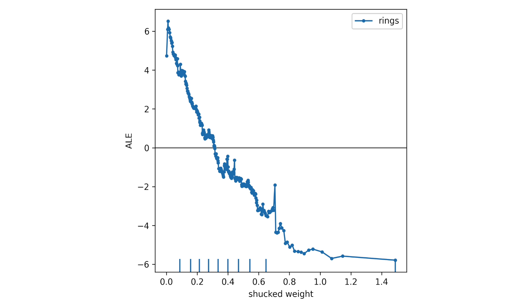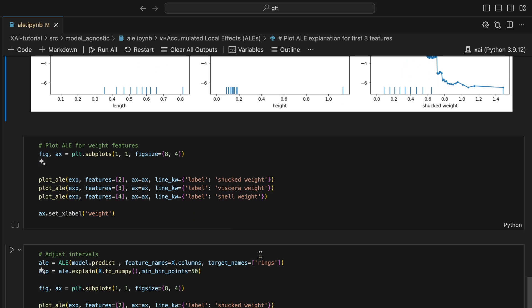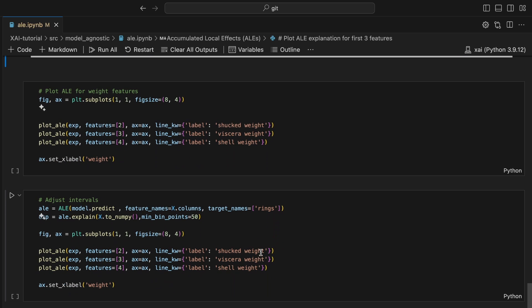So looking at the plot for shuck weight, we can make conclusions like a shuck weight of 0 will increase the predicted number of rings by 6 compared to the average prediction, or a shuck weight of 0 will increase the prediction by 12 when compared to a shuck weight of 1.4. Okay, let's see what else we can do with the ALE package.